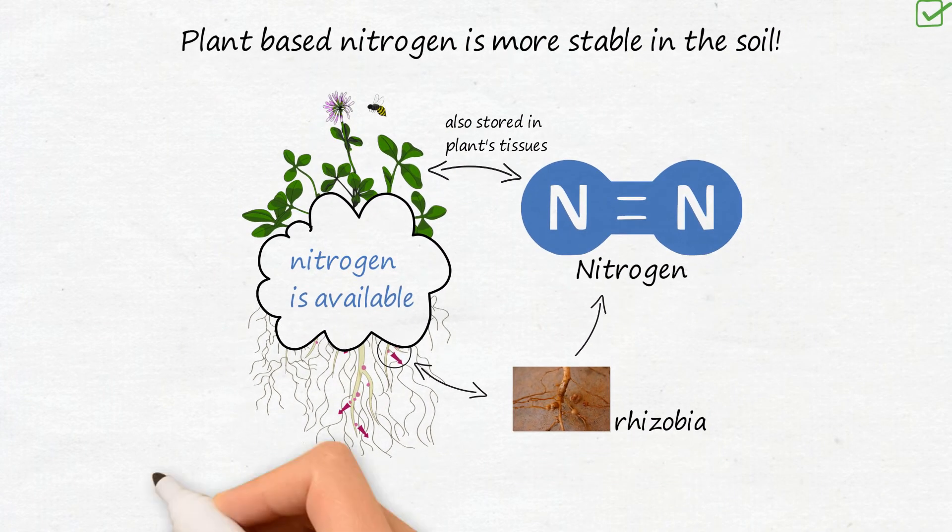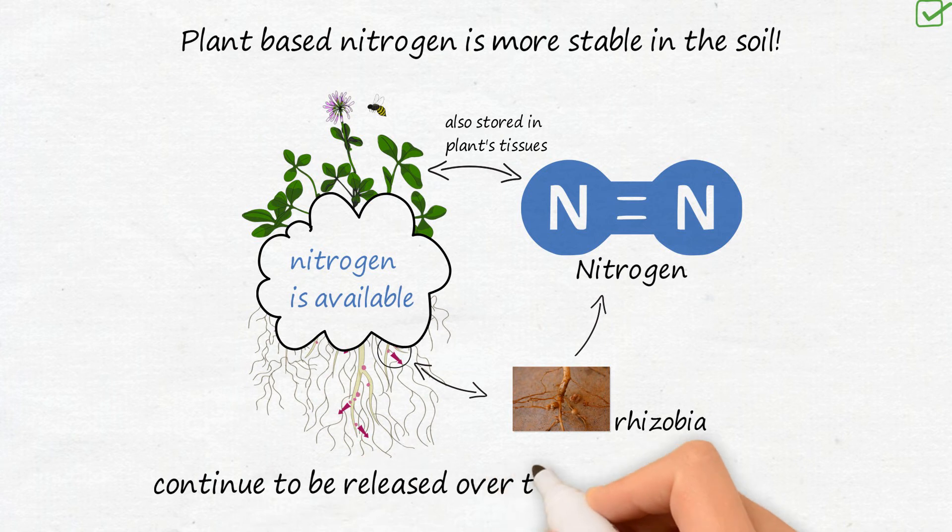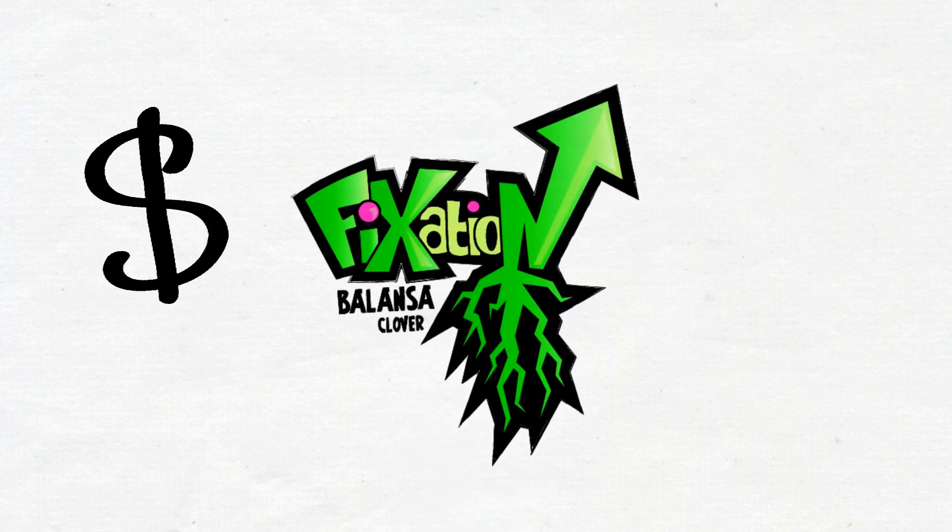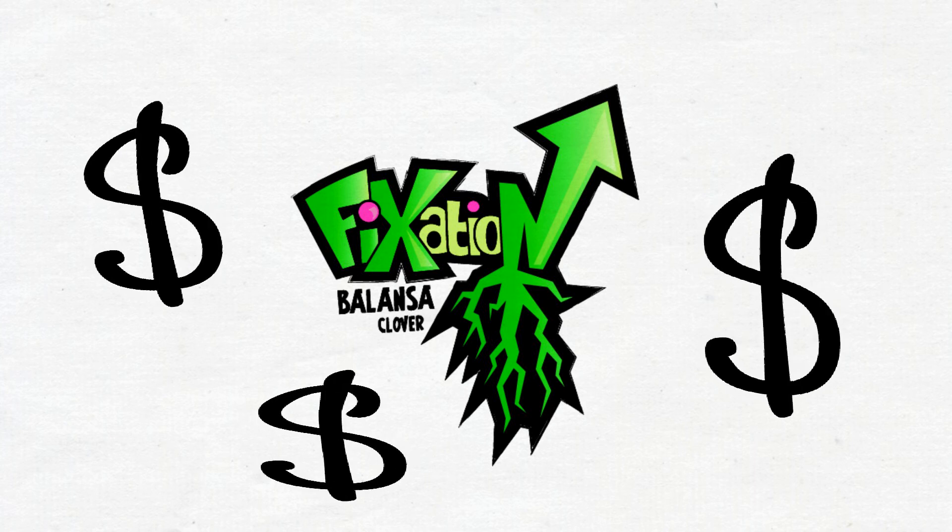As a result, the nitrogen created by the Fixation cover crop will continue to be released over time for future crops. So while Fixation balansa clover is extremely good for your soils, it is also very nice to your bank account.